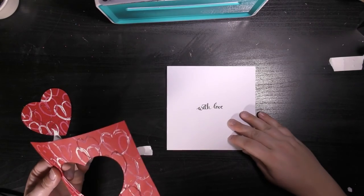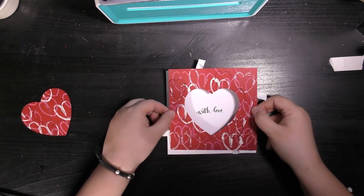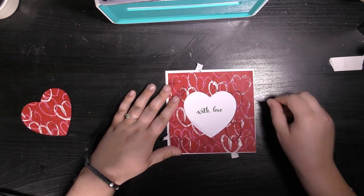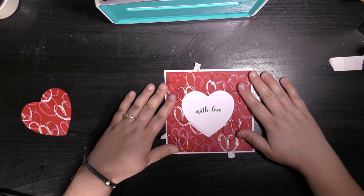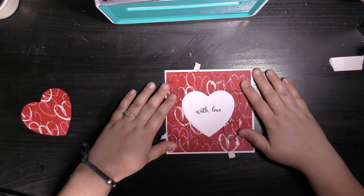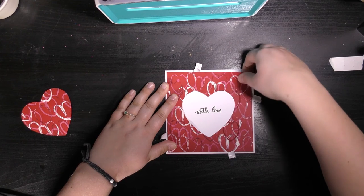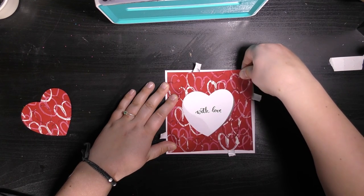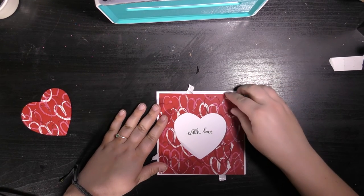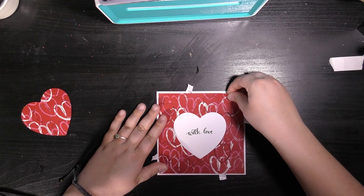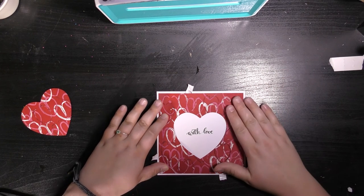Now we just lift one small corner on each of the pieces of our tape and position the heart over the center of the sentiment, making sure we have a nice even white border around the edge. Once you're happy with your positioning, you can peel the backing out of the tape underneath the red paper.